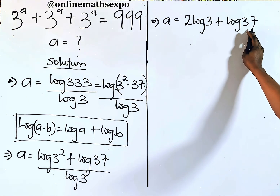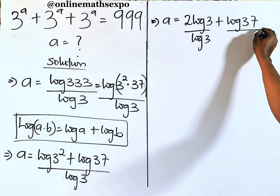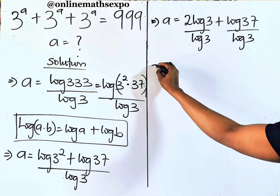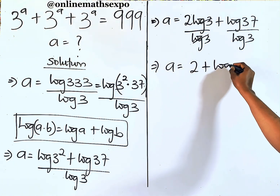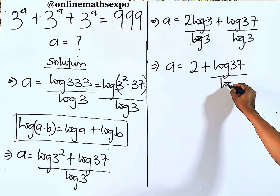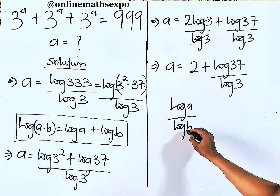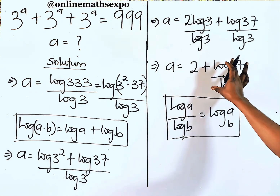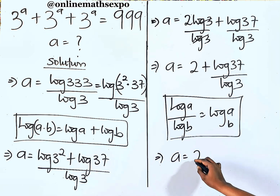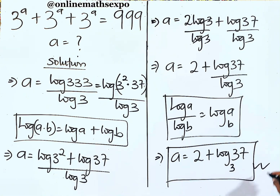Remember that 37 cannot be reduced anymore — it's a prime number. So we use log 3 to divide each term: 2 log 3 over log 3 gives 2, and log 37 over log 3 gives log base 3 of 37, using the change of base rule. So a equals 2 plus log base 3 of 37.